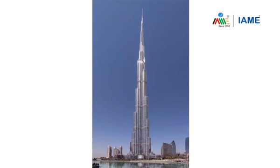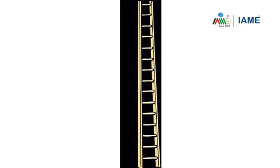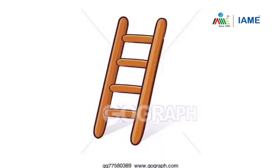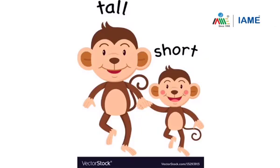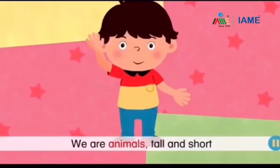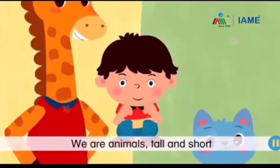Now let's look at some examples of tall and short. Children, can you all see a tall building here? Please touch and show me which is the short building. You can see a tall building and short buildings. Here is a long ladder and this is the short ladder. Tall boy, short girl. Tall monkey, short monkey.